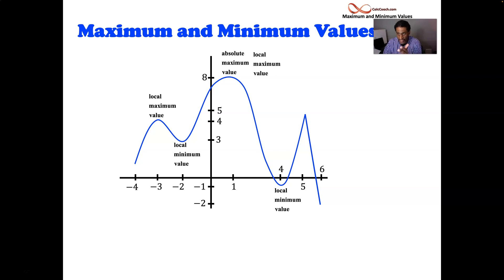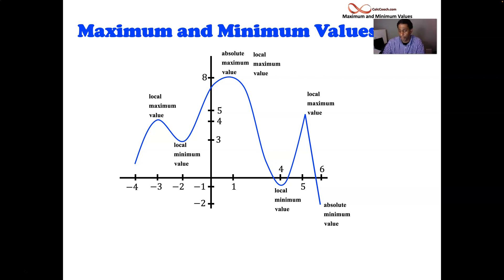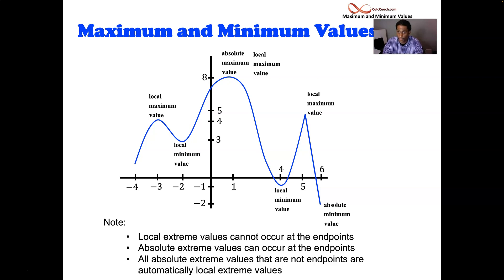What's the smallest value that the function ever gets? It occurs at the endpoint at x equals 6. The domain of this function is from negative 4 to 6. An absolute maximum or absolute minimum value can occur at the endpoints. But when it comes to a local maximum or local minimum value, they cannot occur at the endpoints — you need an open interval. You need to be able to look on both sides. So local minimums and maximums cannot occur at the endpoints; the absolute can, but the locals can't. And whenever you have an absolute maximum or minimum inside the interval, it's guaranteed to also be a local.